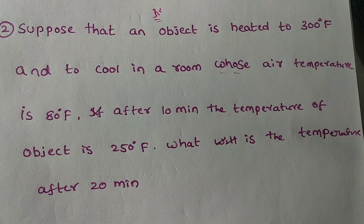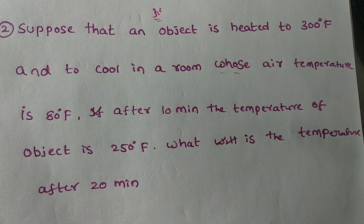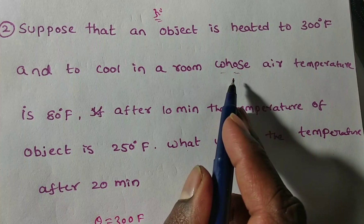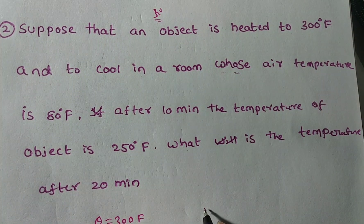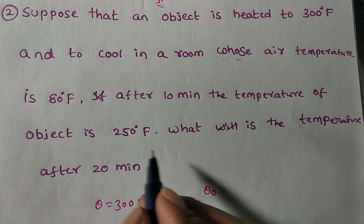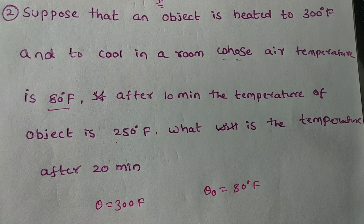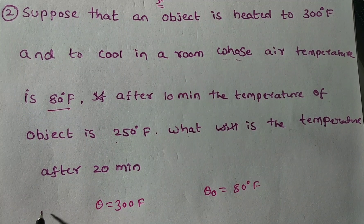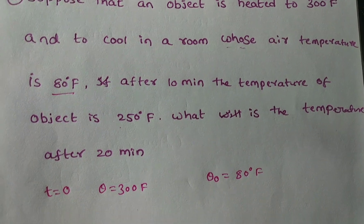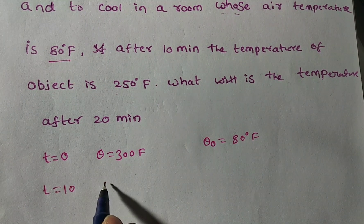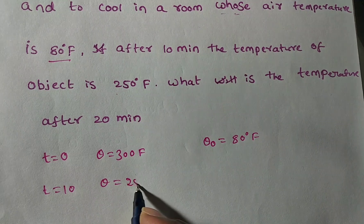To solve this problem, first we have to write the given data. The object is heated at 300 Fahrenheit, so theta is equal to 300 Fahrenheit. The surrounding or room temperature, theta naught, is 80 Fahrenheit. Initially T is equal to 0 minutes. After 10 minutes, so when T is equal to 10 minutes, theta is 250 Fahrenheit.